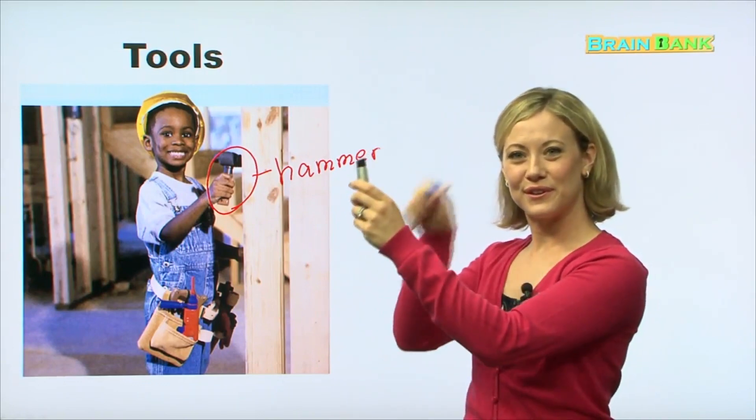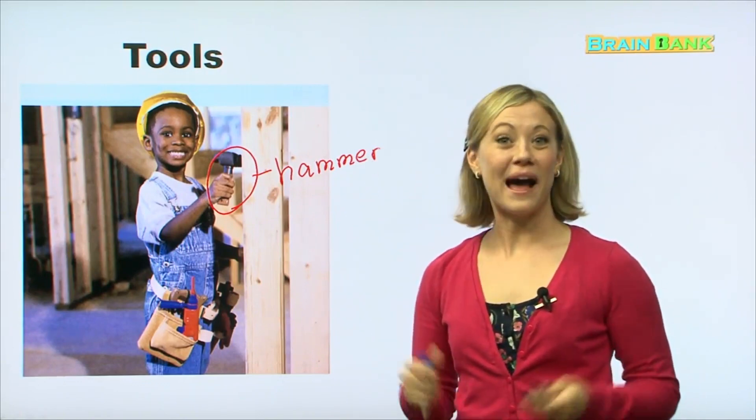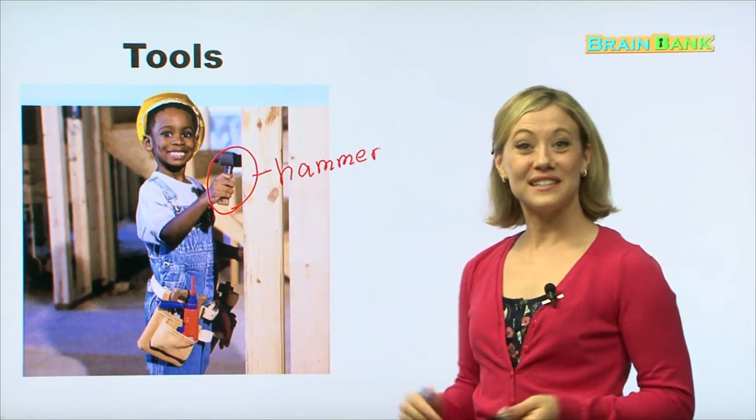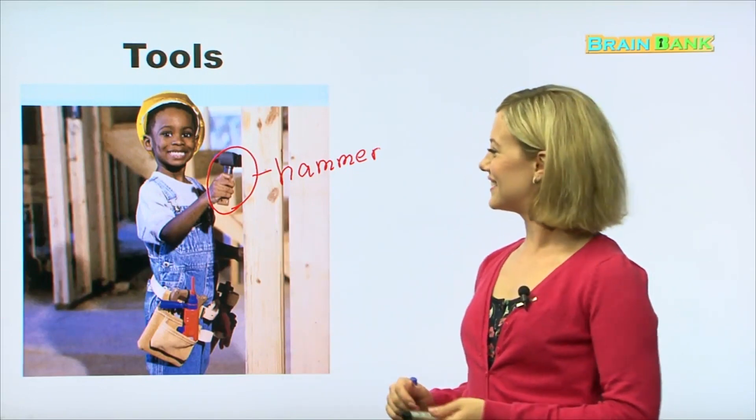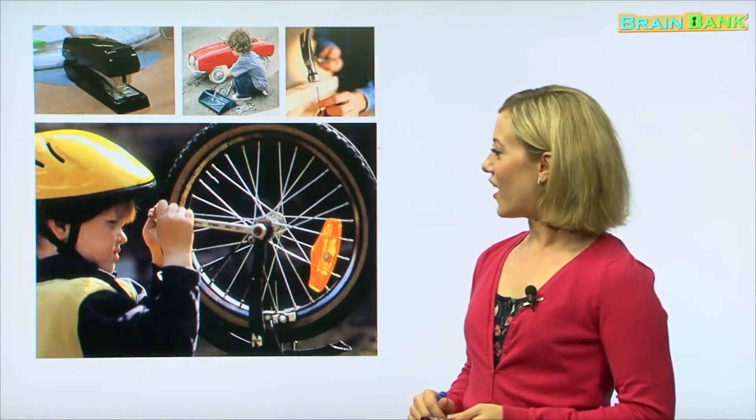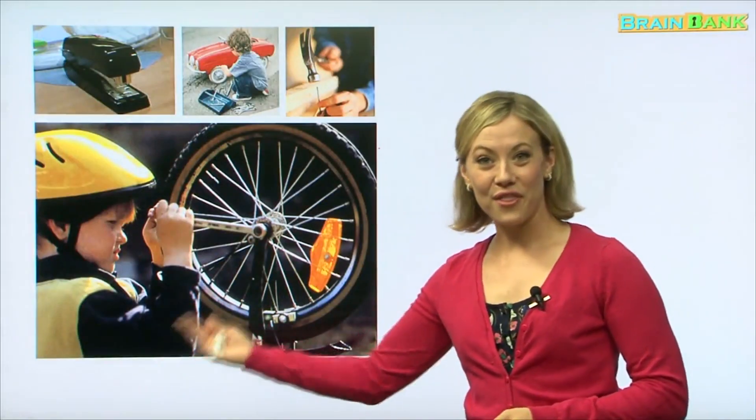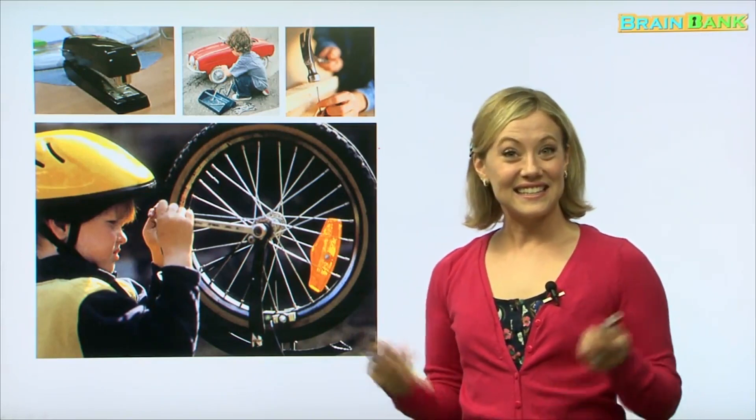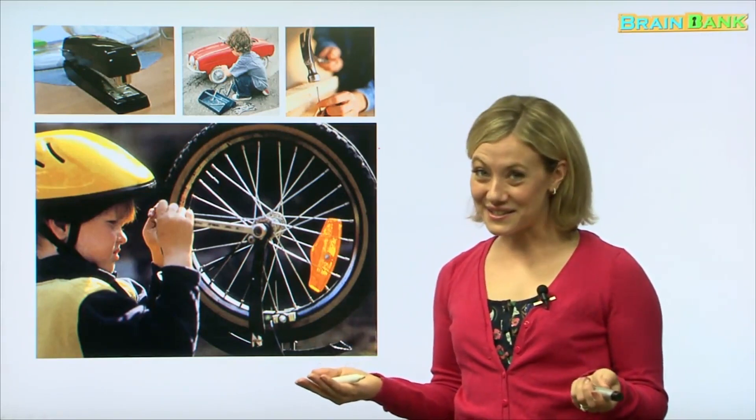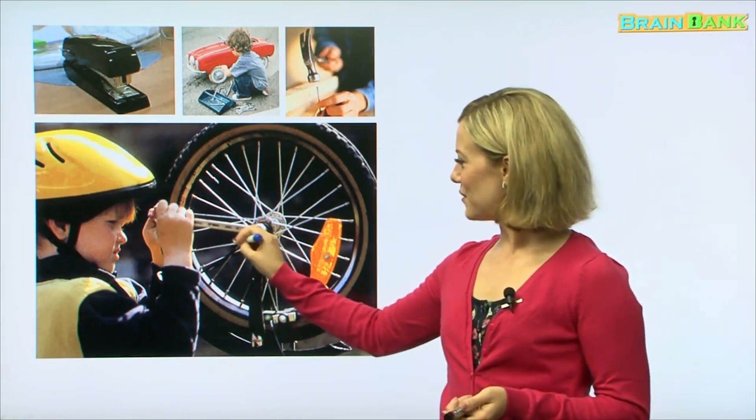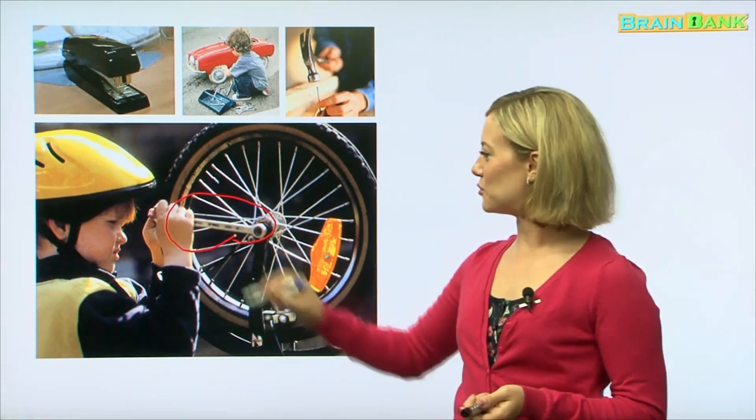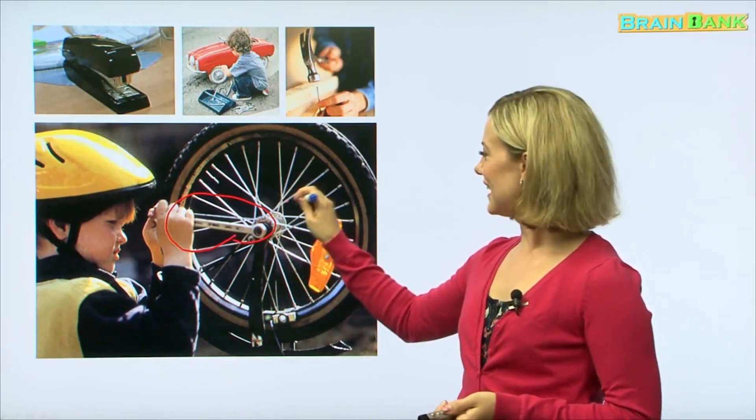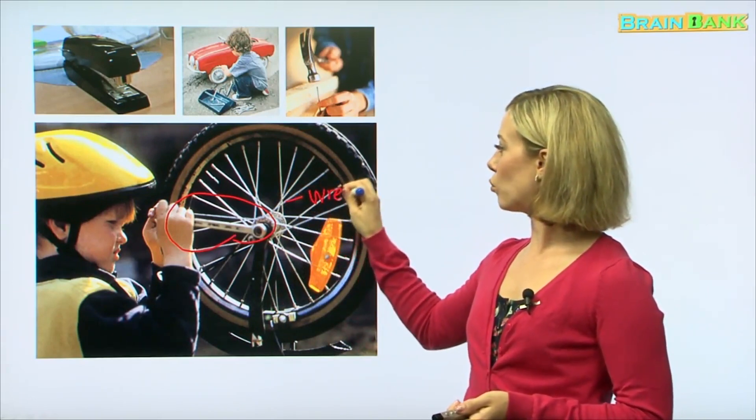That's right, it is a hammer, and we use a hammer to pound nails. Looks like he is using a hammer to build a house. Oh, and now we have another little boy. He is doing something different. Does anyone know what tool he's using? What do we call this tool? That's right, it's called a wrench.